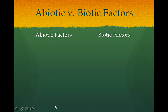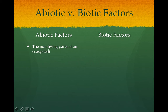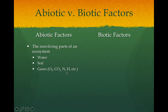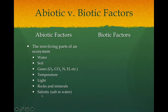Here are those two words: abiotic and biotic. Bio always means living. The opposite of biotic is abiotic, which means not living. Abiotic factors are the non-living parts of an ecosystem. Some examples include water, soil, gases such as oxygen, carbon dioxide, nitrogen, and hydrogen — your primary gases in the atmosphere. Also temperature, sunlight, rocks and minerals in the soil, salt in water or salinity, and the pH — the level of acid or baseness in the soil. Those are all parts of the ecosystem that are important to living things and that they depend on. Those are abiotic factors that need to be in an ecosystem.